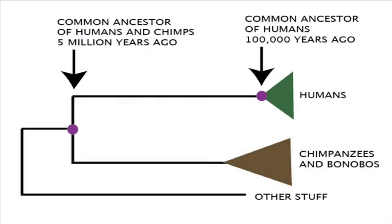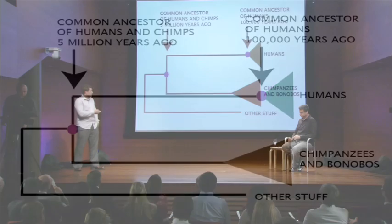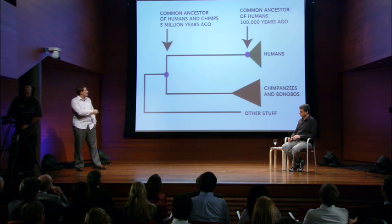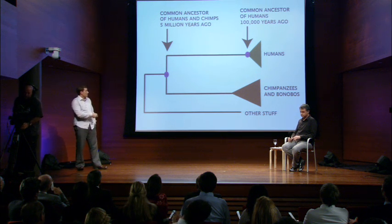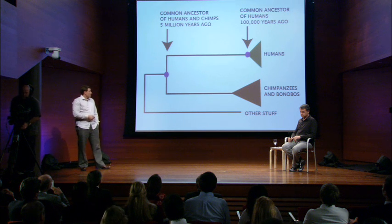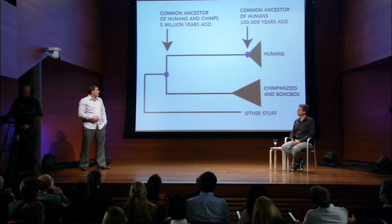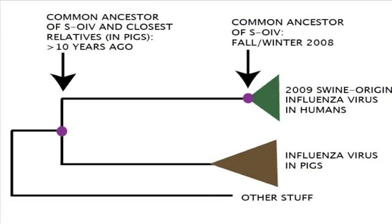As an analogy, I want to show you an evolutionary tree that you're probably more familiar with. We do the same sorts of things for primates. If you do an evolutionary tree of primates, you'd have a human branch on the tree; our most closely related species are chimpanzees and bonobos, and then more distantly related species. You could place a date on the most recent common ancestor of all humans — around 100,000 years ago. You could also ask what's the most recent common ancestor of humans and whatever is most closely related to them, and that's all the way back around 5 million years ago.